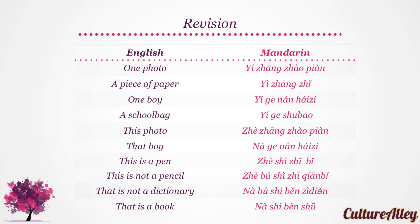Whereas that boy translates to 那个男孩子. This is a pen becomes 这是支笔, and this is not a pencil becomes 这不是支签笔. Lastly, that is not a dictionary is translated as 那不是本字典, and that is a book becomes 那是本书.